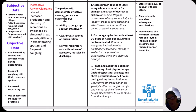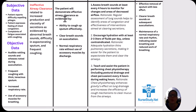Encourage hydration to thin those secretions so they're easier to cough up — at least two to three liters of fluid per day unless contraindicated. Rationale: adequate hydration thins pulmonary secretions, making it easier for the patient to expectorate and clear the airways. Also, teach and assist the patient in performing chest physiotherapy, including postural drainage and chest percussion every four hours while awake. Chest physiotherapy enhances gravity's effect on lung drainage and increases the efficiency of cough mechanisms to clear mucus from the airways.